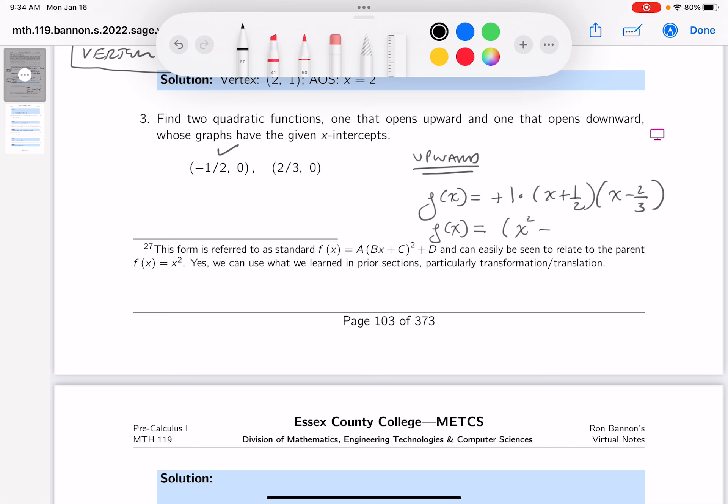Then what do you get? Minus 2/3 of an x. Oops. Plus 1/2 of an x. And then what do you get? You'd get minus 1/3.